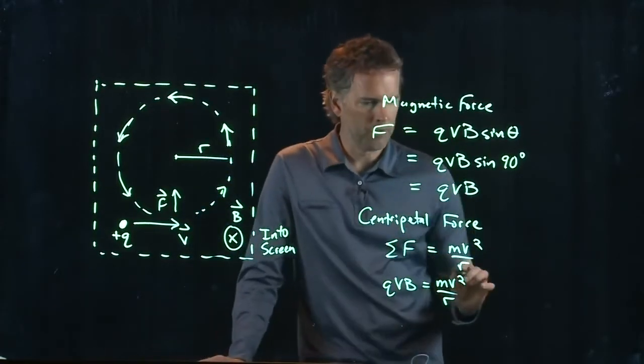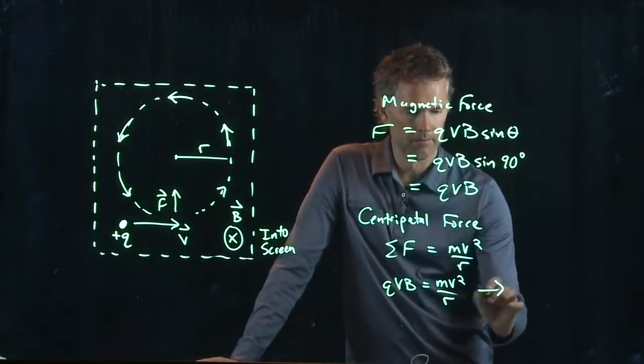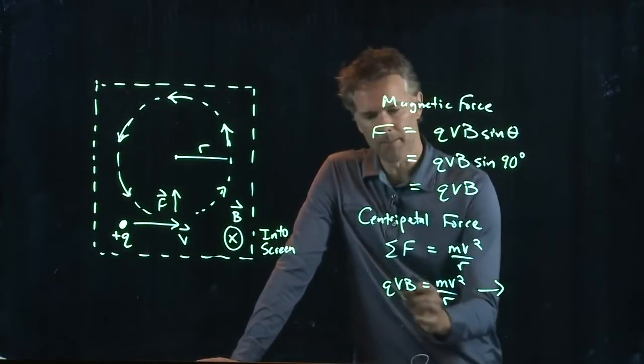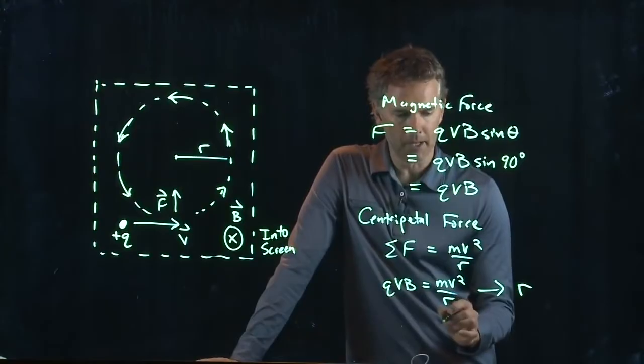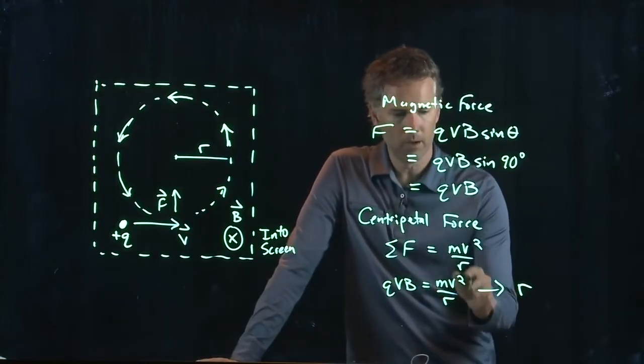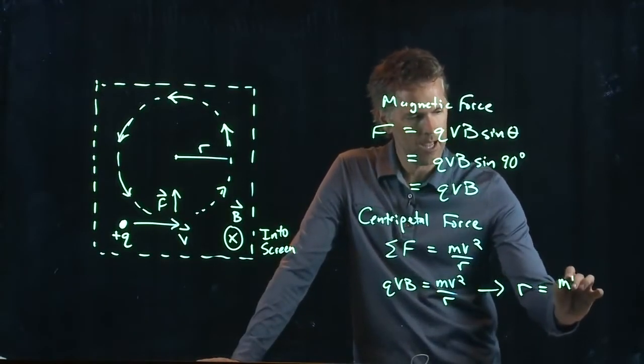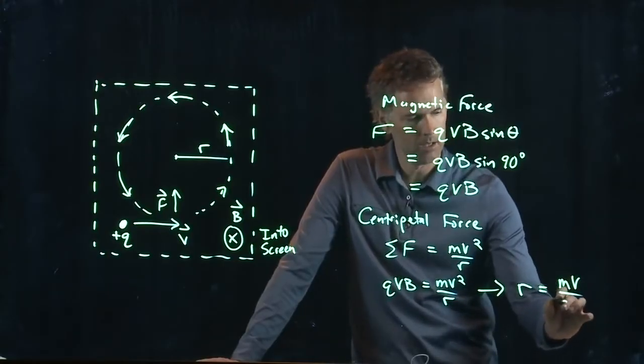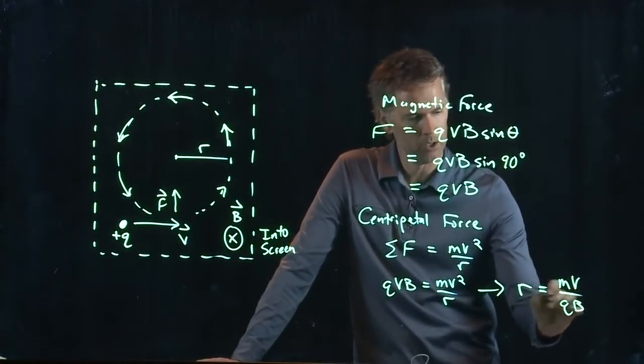that becomes the left side of this equation. So, we get QVB equals MV squared over R. And now, we can quickly solve this thing for the radius. All right? I multiply by R. I'm going to divide by QVB. One of the Vs is going to cancel out. And I get MV over QB.